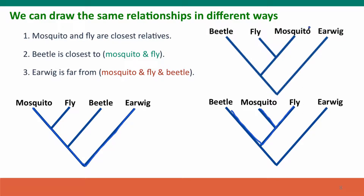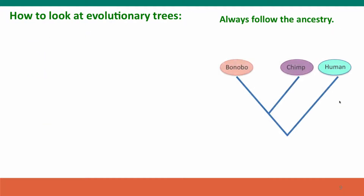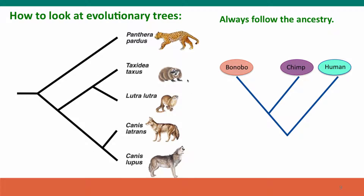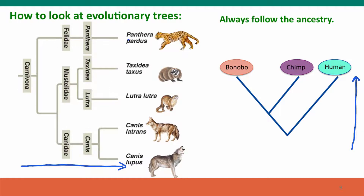Or we could draw it another way — the names are in different orders, the branch point tips are in different orders, but the arrangement of relationships is the same. We can also draw trees turned on their side so that time flows horizontally instead of vertically. We don't have to use diagonal lines either; we can draw a tree using squared-off lines where the distance that matters is the distance going back in time. Those horizontal lines are just serving as spacers and don't carry any time information.